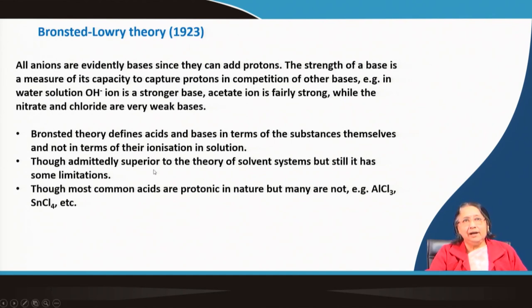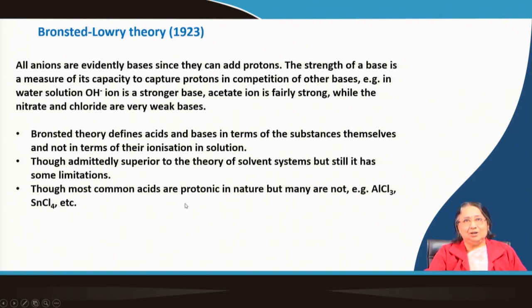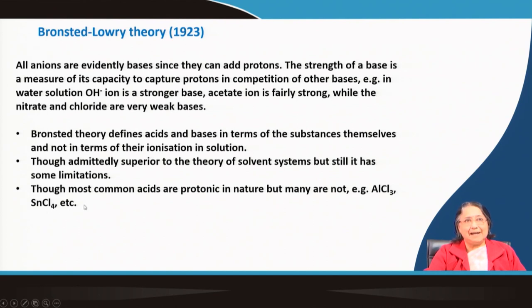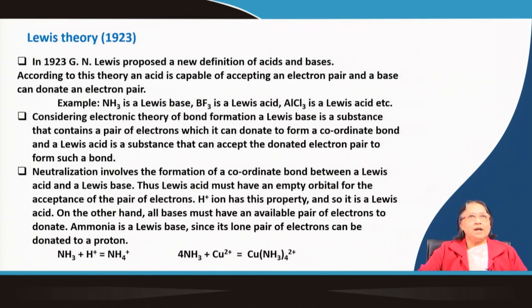Though admittedly superior to the theory of solvent systems, the Bronsted theory still has some limitations. Though most common acids are protonic in nature, many are not. For example, aluminum chloride — we know it is acidic, but how can it be explained in terms of Bronsted theory? It is not possible. Similarly, stannic chloride is also acidic, so these are the limitations of the Bronsted theory.